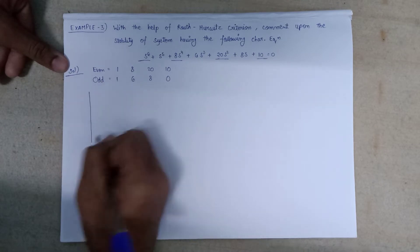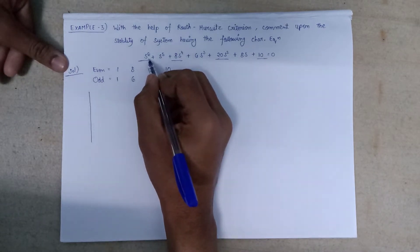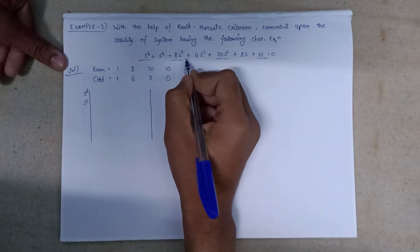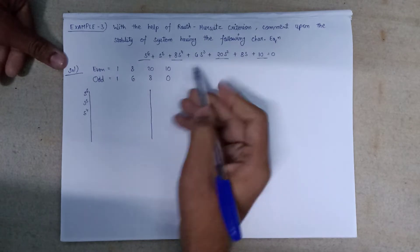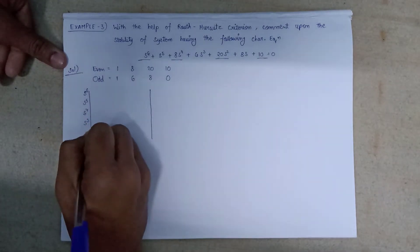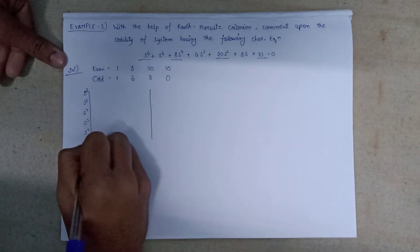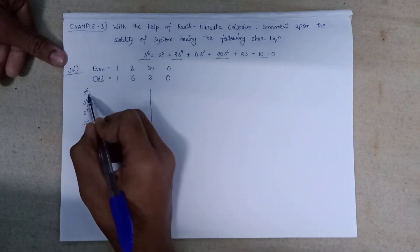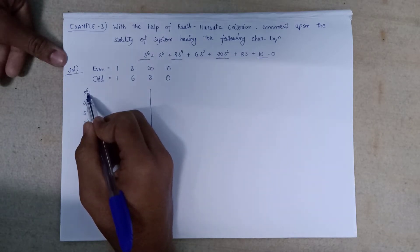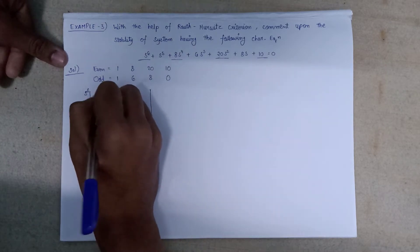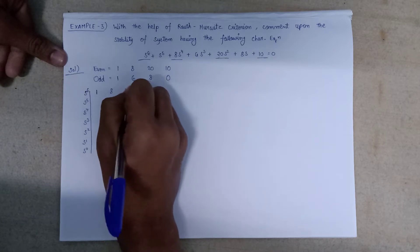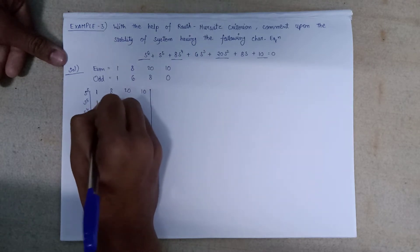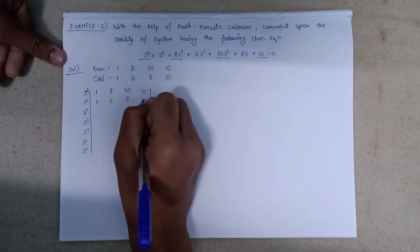Let's perform the formation of the Routh array. We write all the s powers on the left-hand side: s⁶, s⁵, s⁴, s³, s², s¹, s⁰. Since s⁶ is even, we write the even coefficients first: 1, 8, 20, 10. Since s⁵ is odd, we write the odd coefficients: 1, 6, 8, 0.